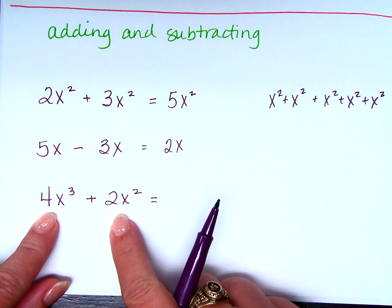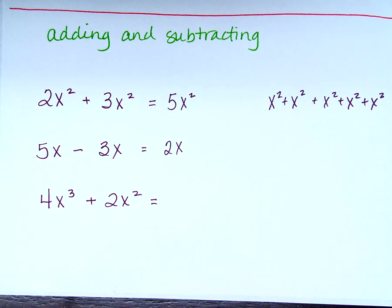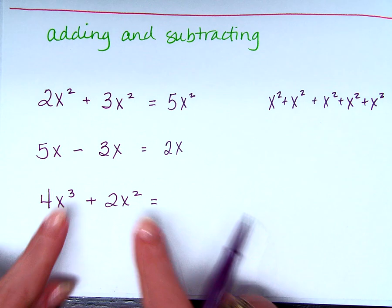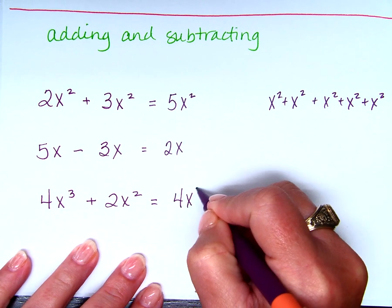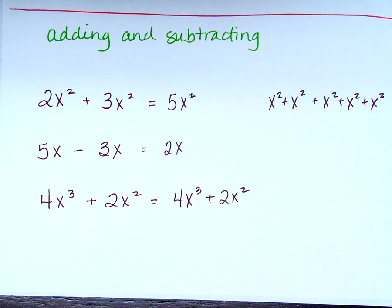What about this problem? 4x to the third plus 2x squared. What's the answer? I can't combine them because they're not like terms. So the answer is just 4x to the third plus 2x squared. Just because I can't combine like terms doesn't mean I can't have those two things adding together. Once I know what x is, I could substitute it in and get an actual number.